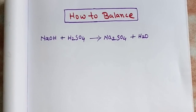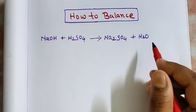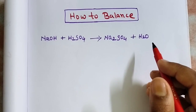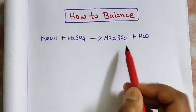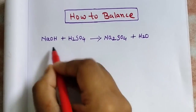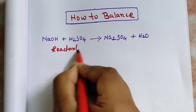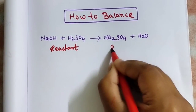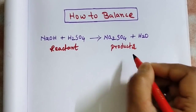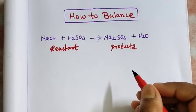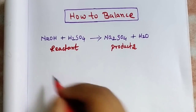Hi everyone, welcome to Resonance. To balance this equation, you need to count the number of atoms of each element. Here, LHS is the reactant and RHS is the products.